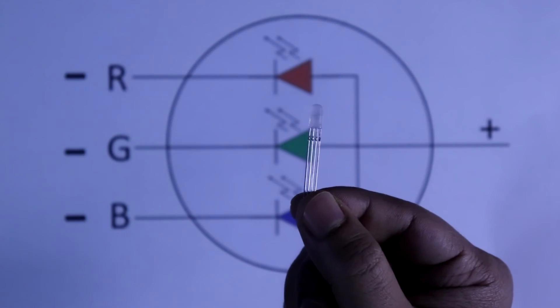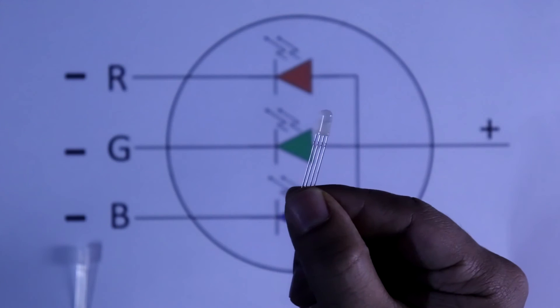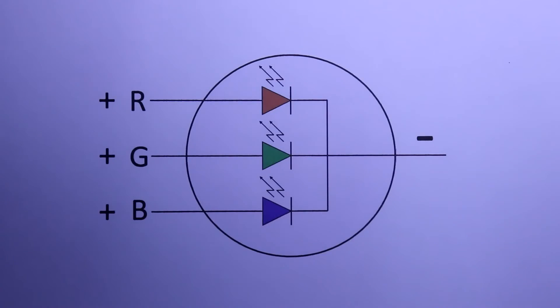This is 5mm common anode LED. We also have common cathode LED. 5mm common cathode, it means one negative and three positive.